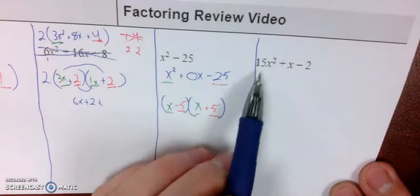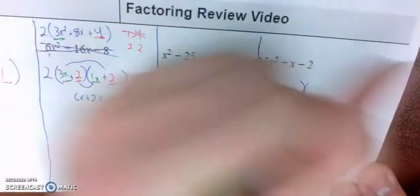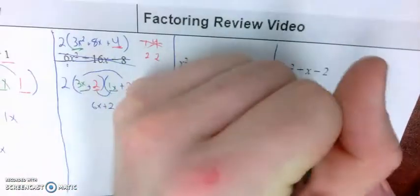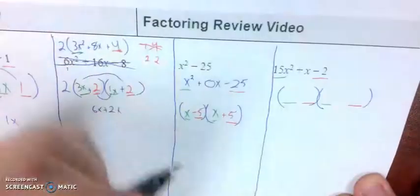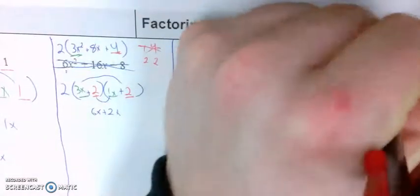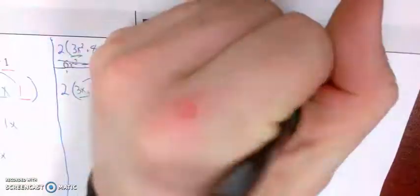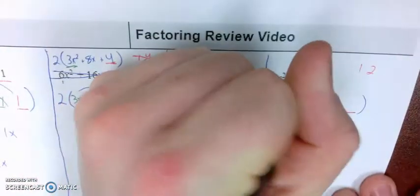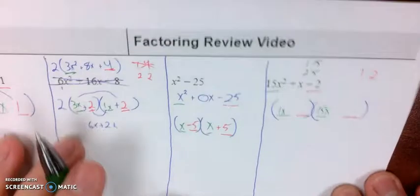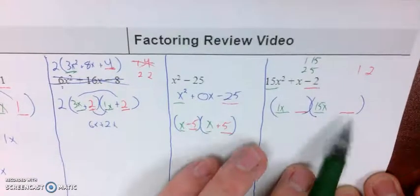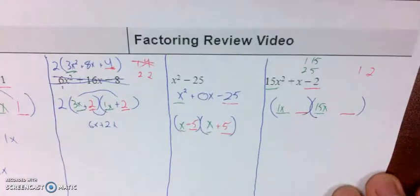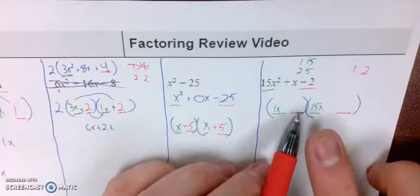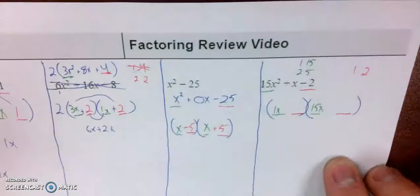Last and final one, we have 15x squared plus x minus 2. Unfortunately, there is no GCF, which means we might have to do a little extra guessing and checking. The first term is 15, that last term is a negative 2. There's only one way to get a 2, that's 1 times 2. However, the 15, I've got 1 and 15, then I've got 3 and 5. Let me try 1x and 15x first. Neither combination of 1 and 2 gives 1x, so that's not going to work.